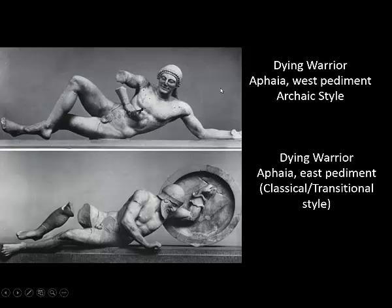We can also see, with these sculptural features, some of the problems inherent within the archaic style. One of the biggest issues is the presence of the smile. When we see the smile, we read it as expressing a positive emotion, and that is really at odds with the fact that he has an arrow coming out of his chest and he's in the process of dying. It's really hard to identify with and understand this sculpture on an emotional level when you have the smile. The reason why we have the smile is that it's meant to indicate life — that the figure is living. It's not meant to indicate happiness. So we see that this figure is still alive, even though he has been wounded and will not be alive for much longer.